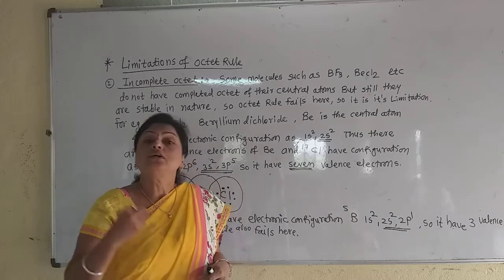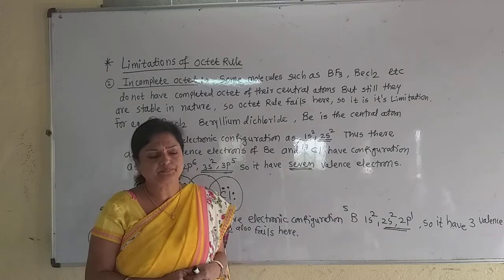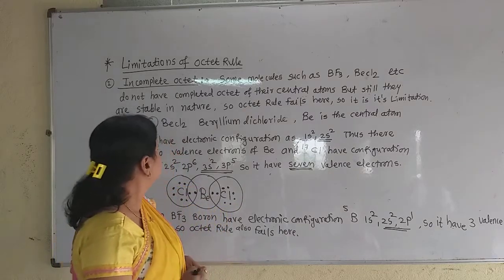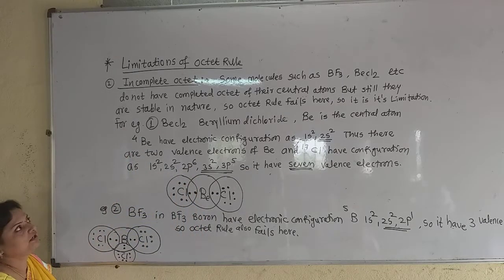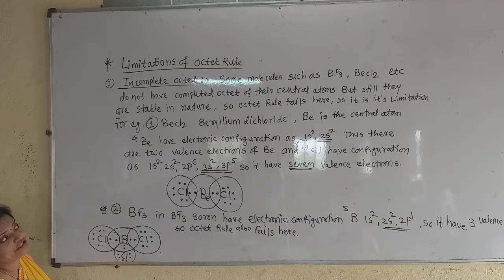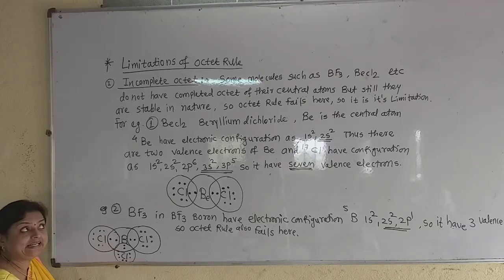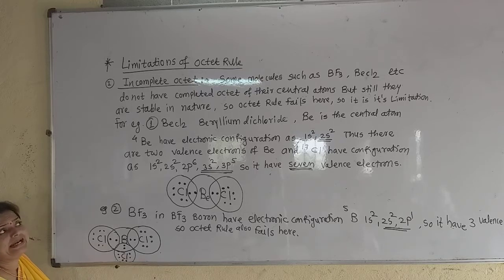And the third limitation is that some molecules have an odd number of electrons. Now let us first see such molecules which have the incomplete octet. Now which are the molecules whose central atom has an incomplete octet? Some molecules such as boron trifluoride, BF3, and beryllium dichloride.